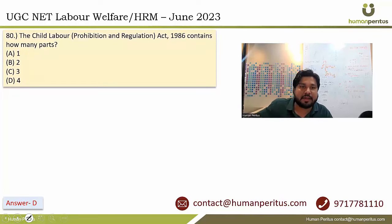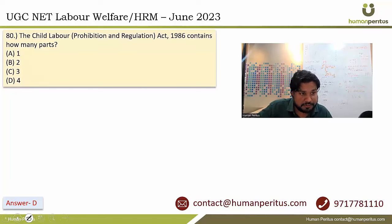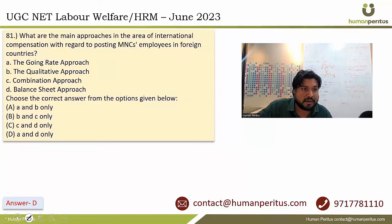The Child Labour Prohibition and Regulation Act contains how many parts? It has two parts. Option B is the correct answer.